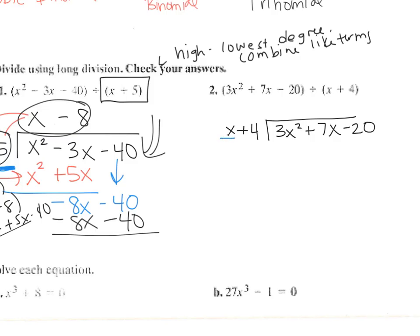So x times something is 3x squared. It's 3x. So now I multiply this 3x through. So it's going to be 3x squared and then plus 12x. And I subtract. 7x minus 12x is negative 5x. And then you bring down the negative 20.